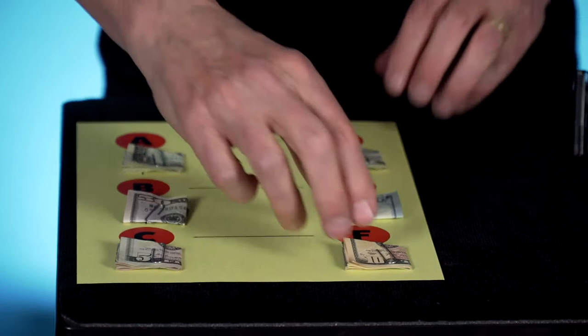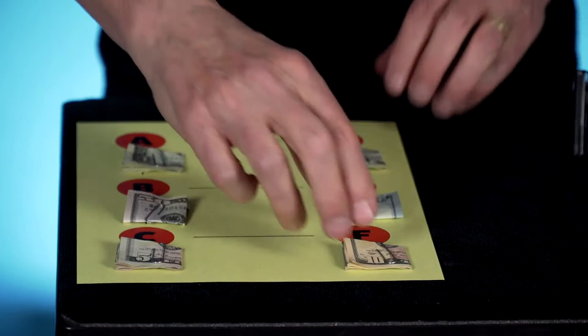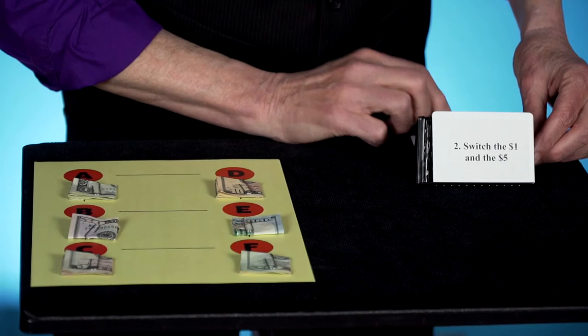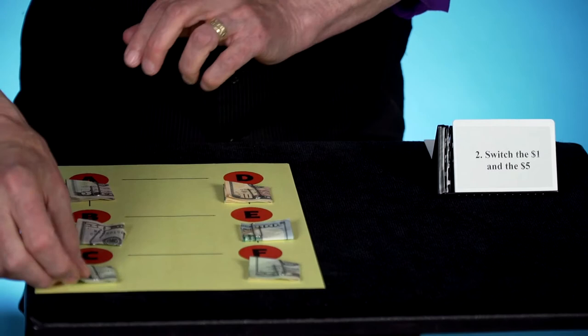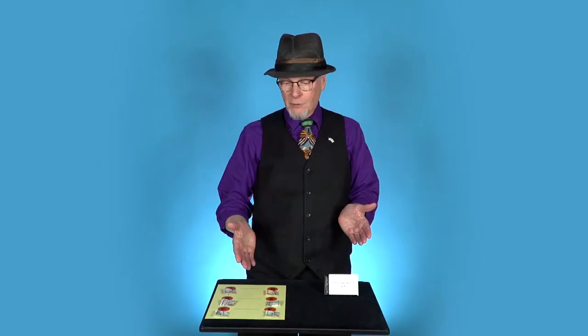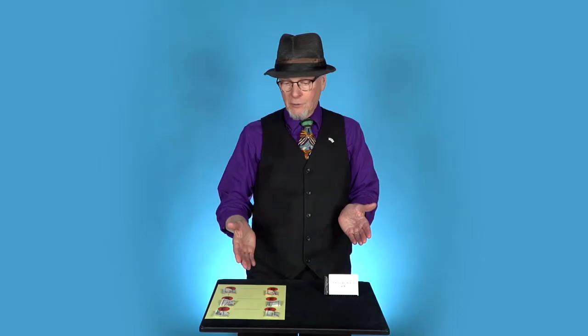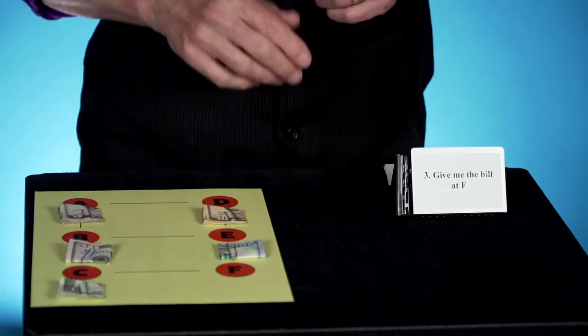Here are the instructions. We're going to start by switching the 10 and the 20. So we're going to take the 10 over here and switch it with the 20. Instruction number one. Number two, switch the 1 and the 5. Okay, where's the 1? Here. The 5 is here. The 5 goes here. The 1 goes here. Down to number three. Give me the bill at F. Good news for you. It's only $20. It's coming back to me. Plenty of money still in play.